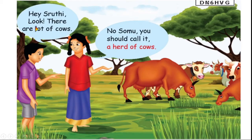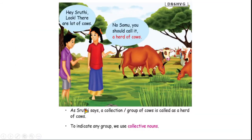Hi Shruthi, look, there are a lot of cows. No Somu, you should call it a herd of cows. As Shruthi says, a collection or group of cows is called a herd of cows. To indicate any group, we use collective nouns.